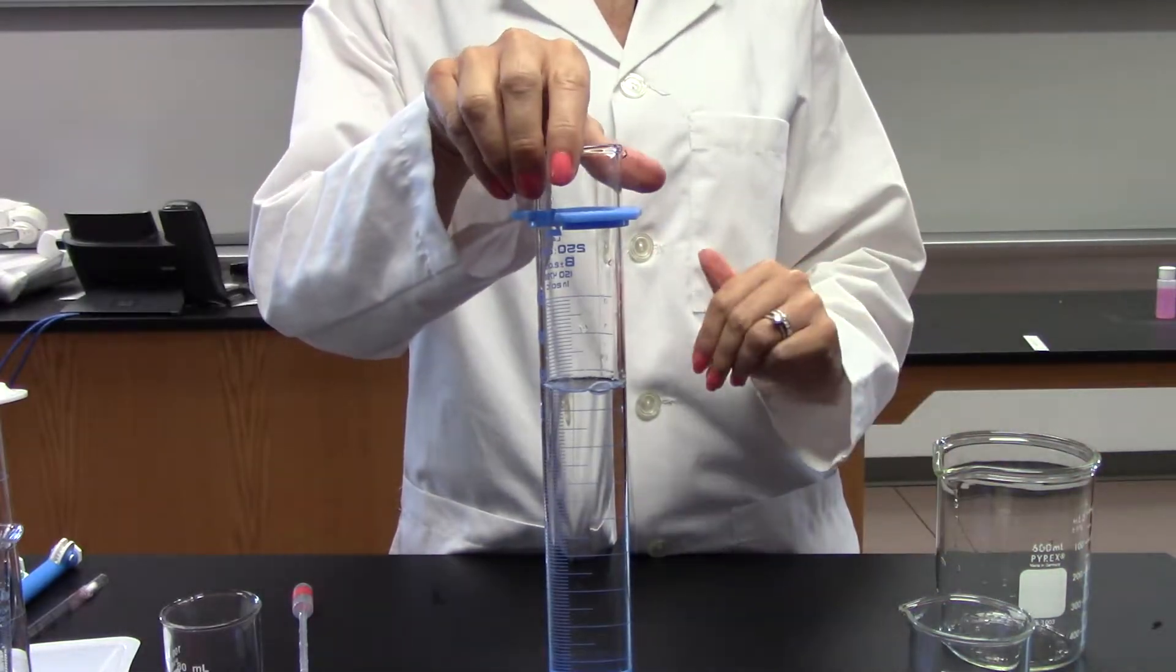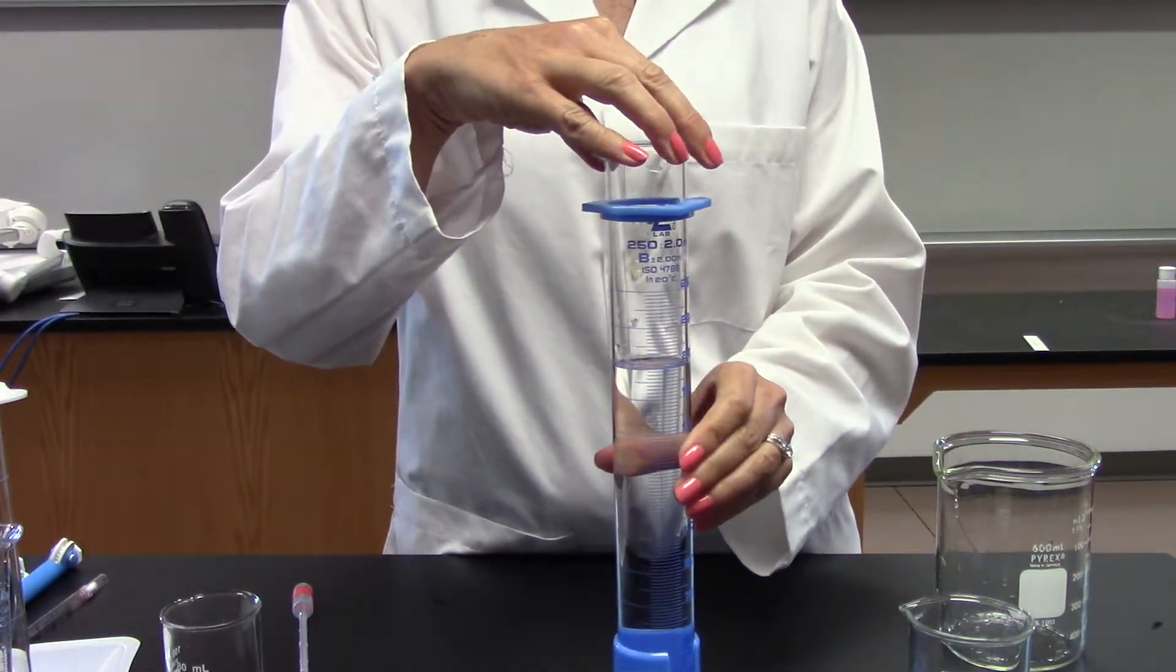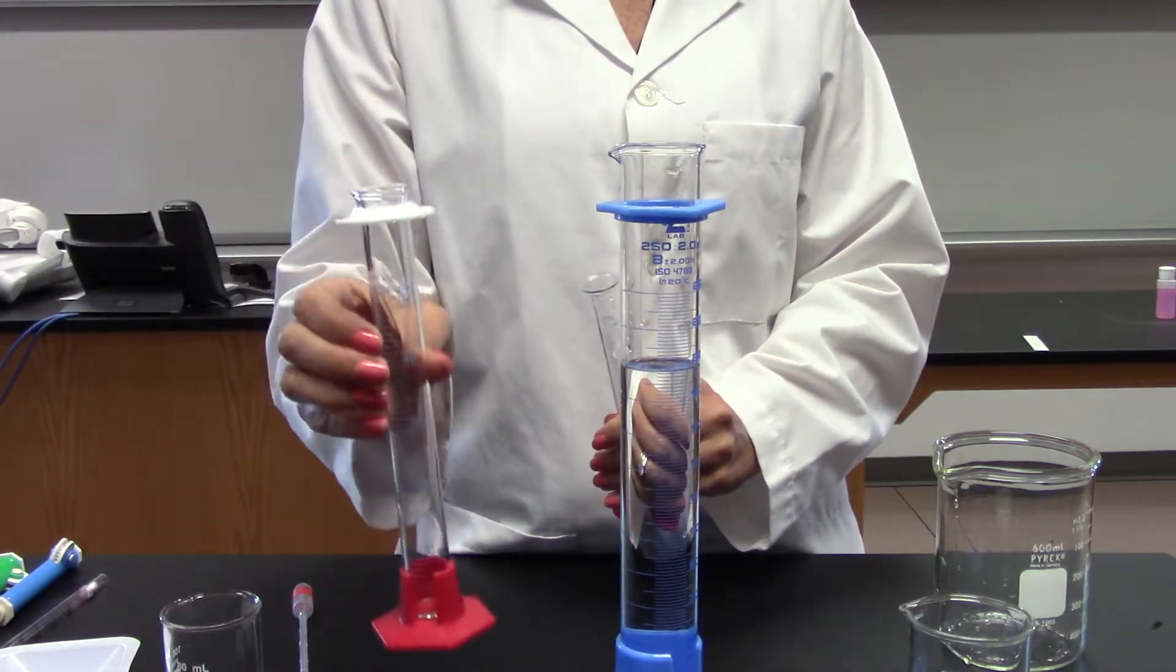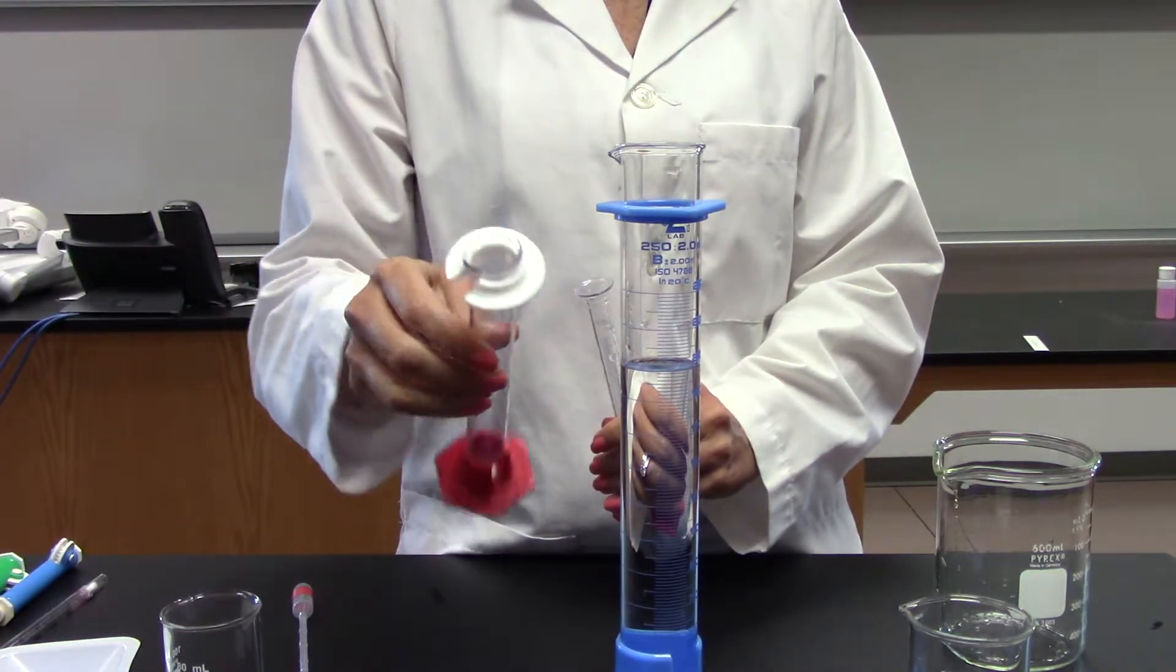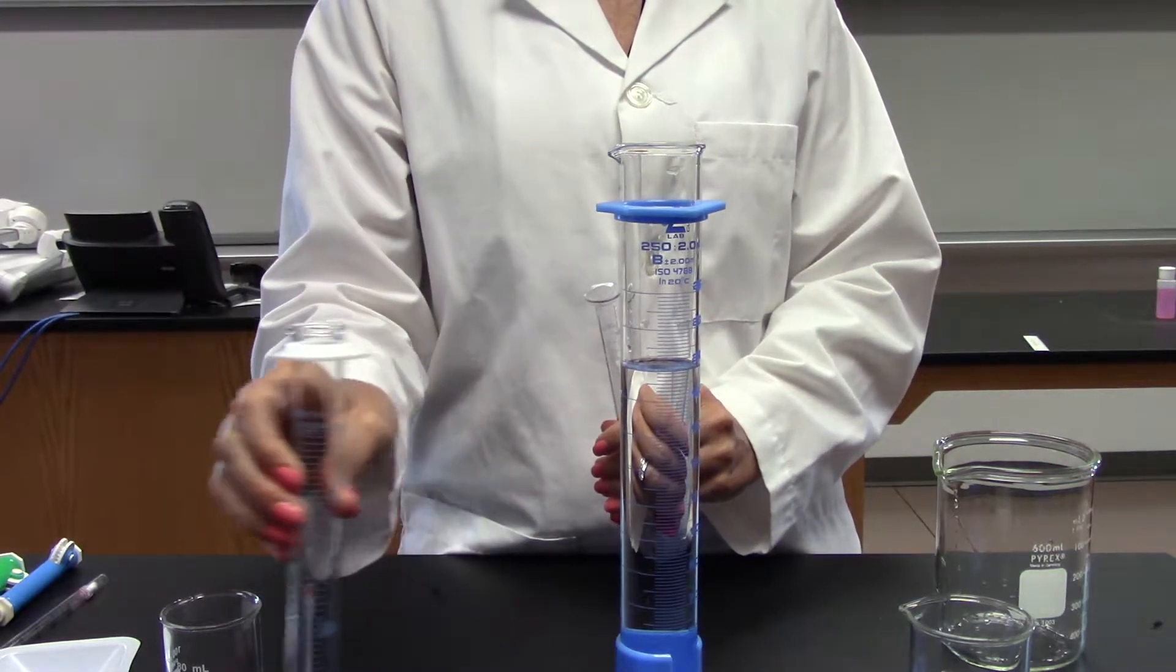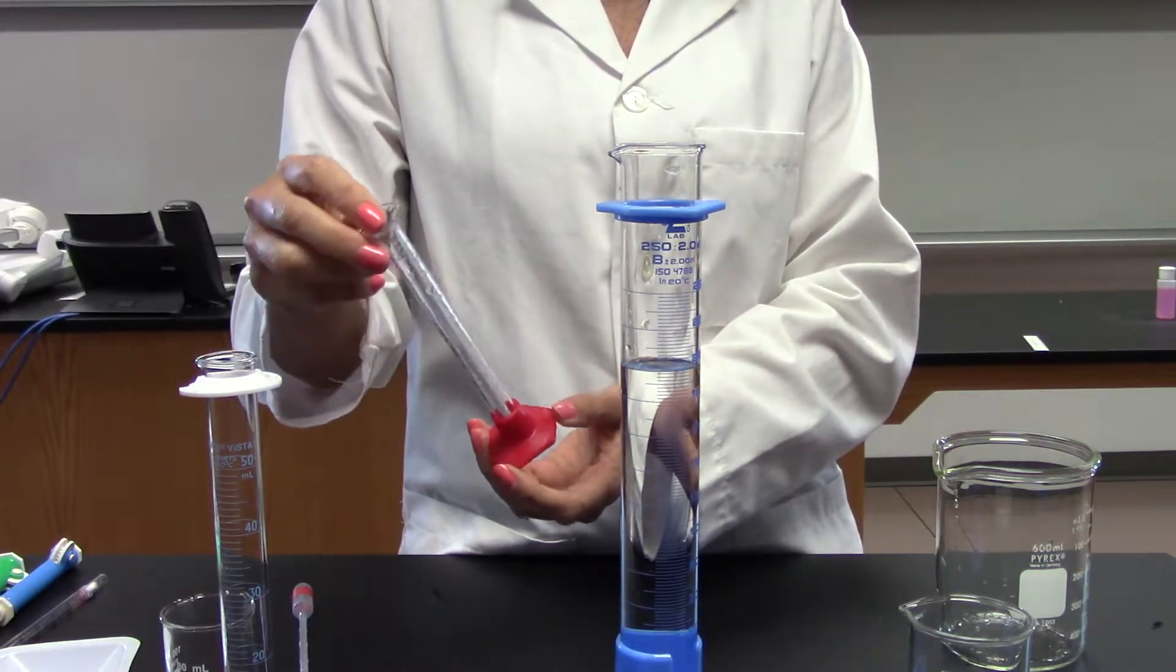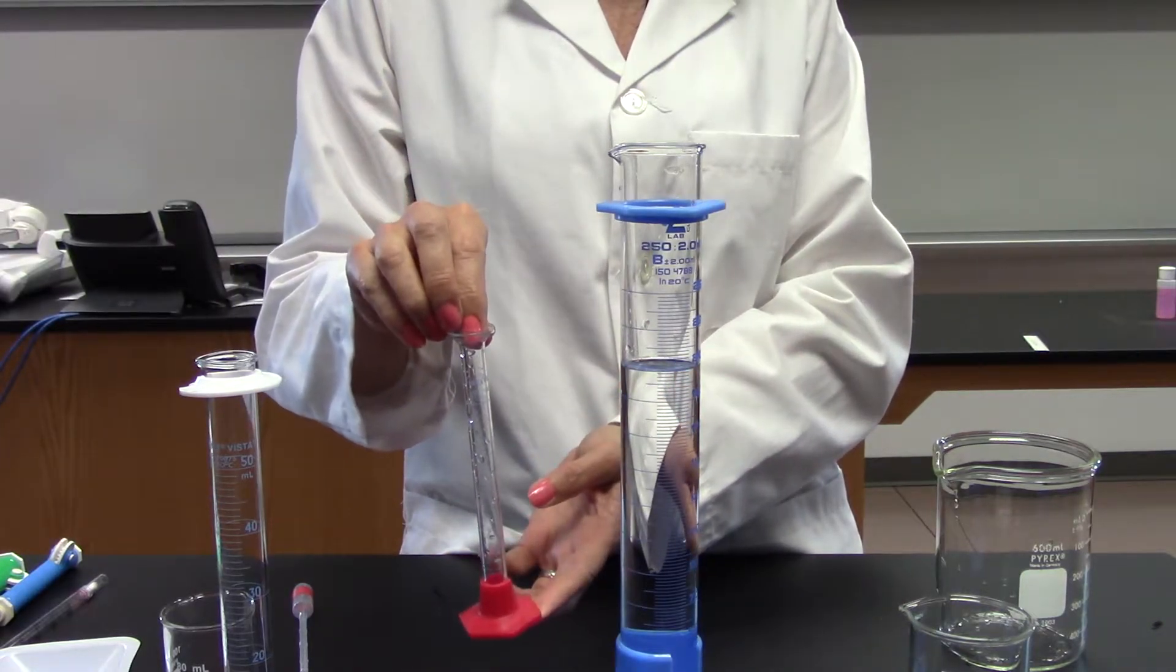Graduated cylinders are far more accurate and become more accurate the smaller the diameter. So you can see this is a 50 milliliter graduated cylinder with a smaller mouth than this one, smaller diameter. And this one is even smaller - this is a 10 milliliter graduated cylinder.